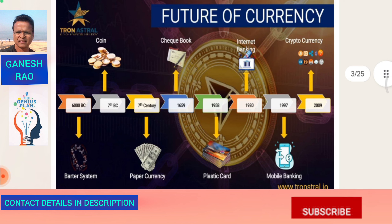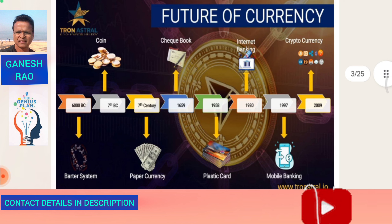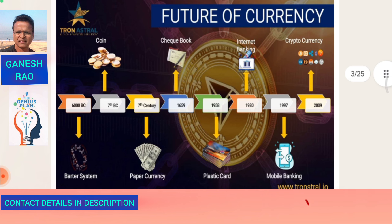In the 7th century BC, gold, copper, and silver coins were introduced. In the 7th century AD, paper currency was introduced. The checkbook was introduced in 1659. Plastic cards came in 1958. Internet banking came in 1980. Mobile banking came in 1997. And in 2009, the biggest revolution in currencies happened with the introduction of cryptocurrency.